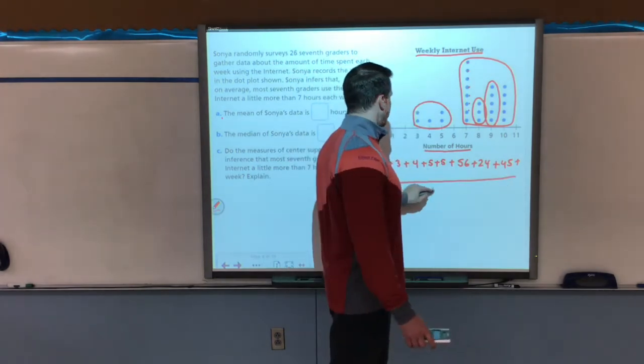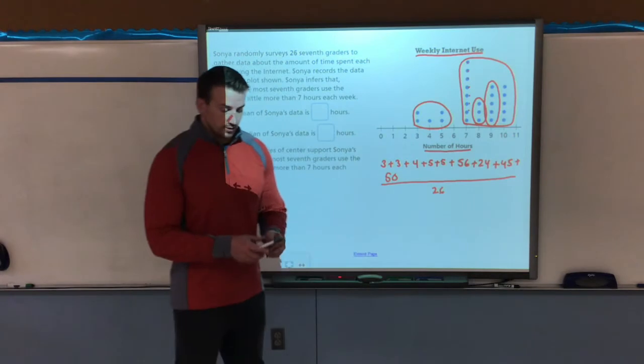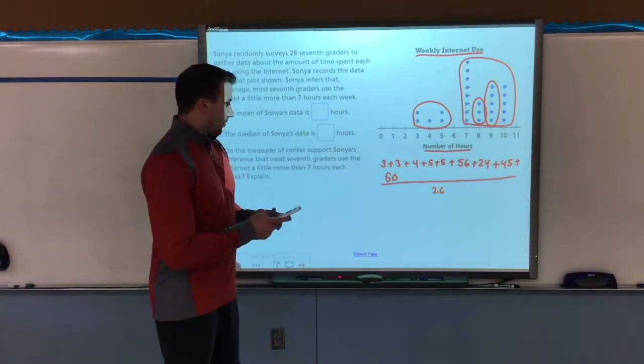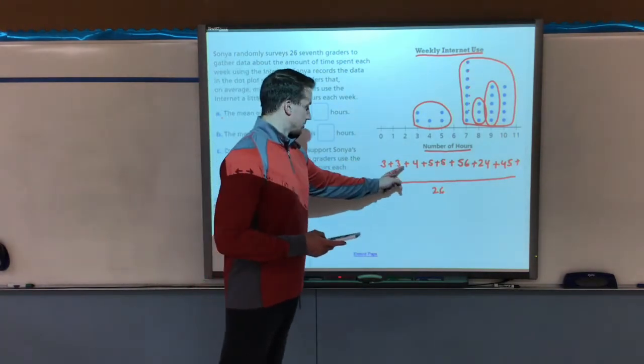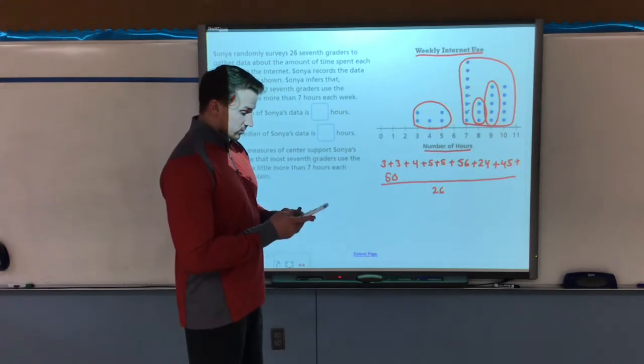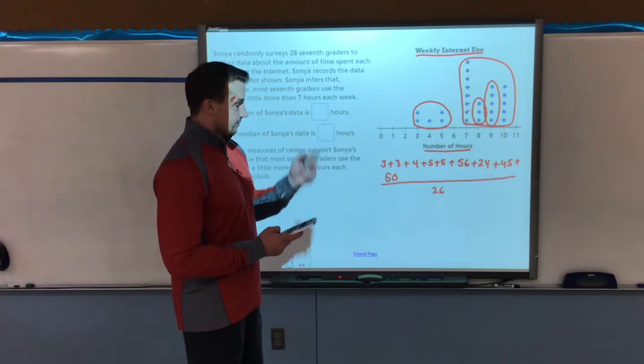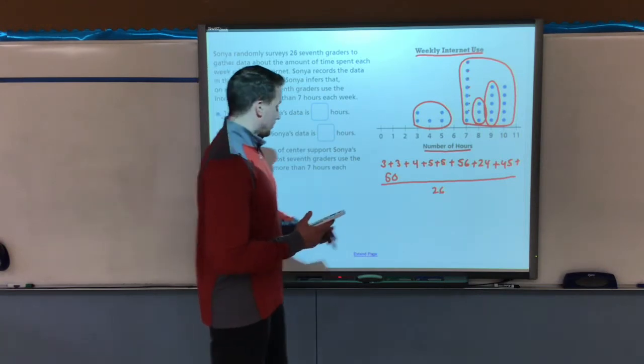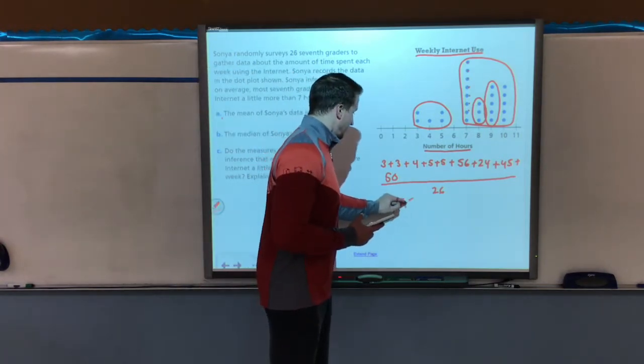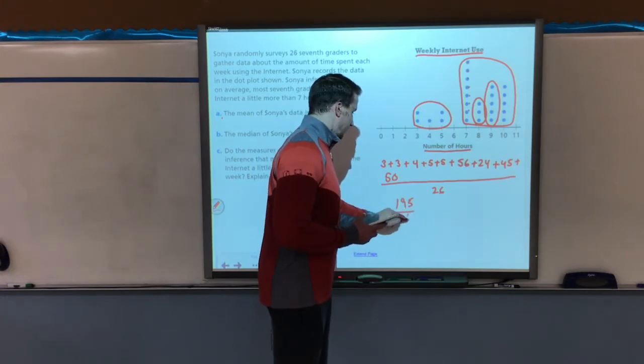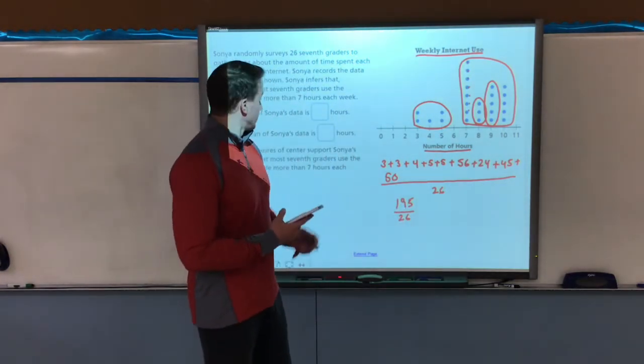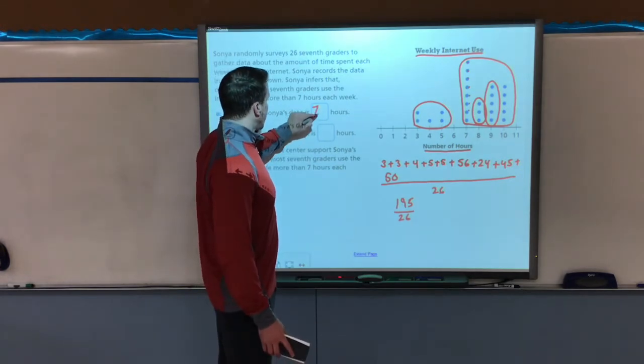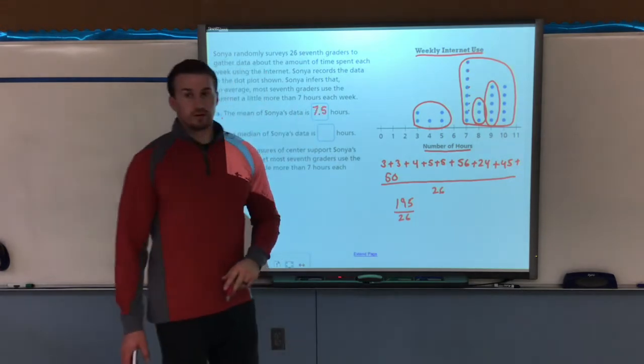So I'm going to add all these up and divide by my total number of students, which is 26. So here we go. I have three and three, which is six, plus four is 10, plus two fives is 20, plus 56, because that's seven times eight, plus 24, plus 45, and 50. I get a total of 195, and I'm dividing that by now 26. It gives me an average of seven and a half hours.